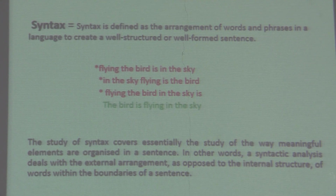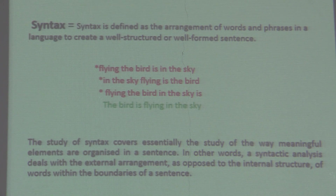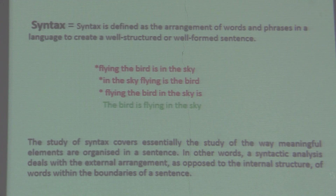I have here four sentences. The first three are in red, meaning they are ungrammatical and not well-formed. Number one: 'flying the bird is in the sky.' Number two: 'in the sky flying is the bird.' Number three: 'flying the bird in the sky is.' All three are ill-formed because they do not respect the syntactic rules. In contrast, number four, the green one, is a perfectly well-formed sentence.